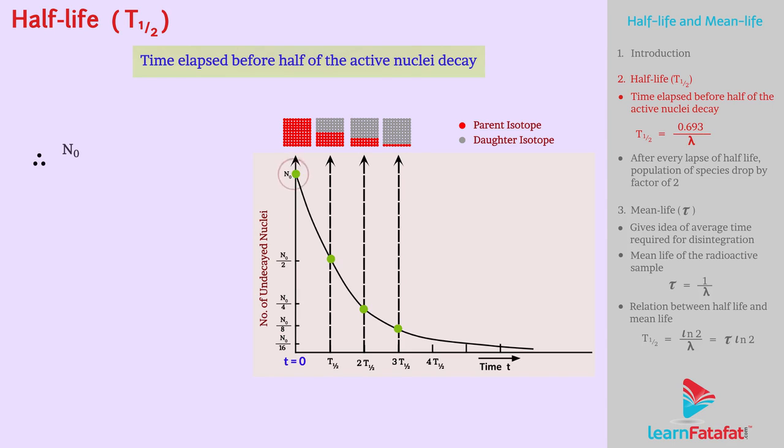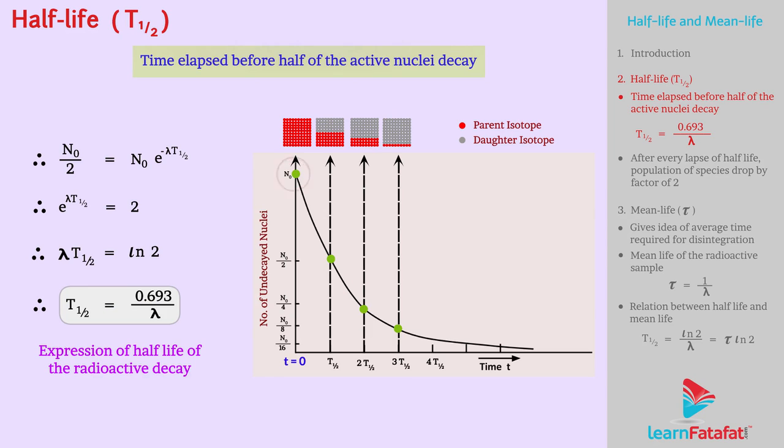Therefore, N₀/2 = N₀e^(-λt₁/₂). e^(λt₁/₂) = 2. Therefore, λt₁/₂ = ln 2. Therefore, t₁/₂ = 0.693/λ. This is the expression of half-life of radioactive decay.